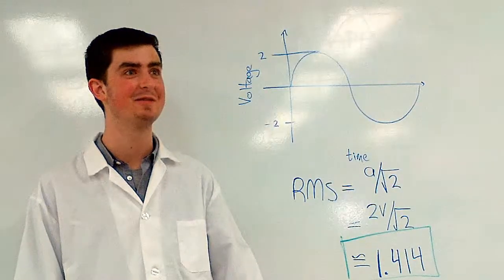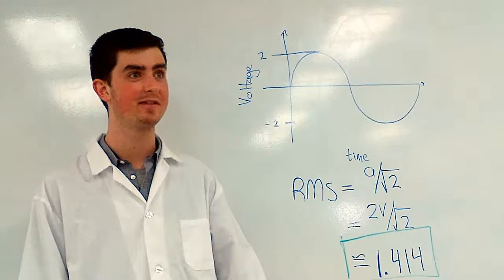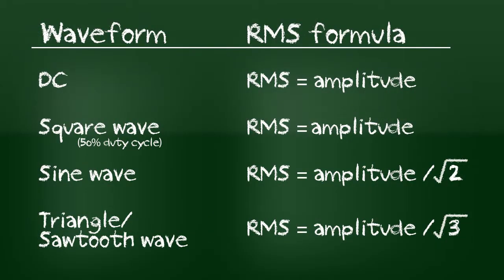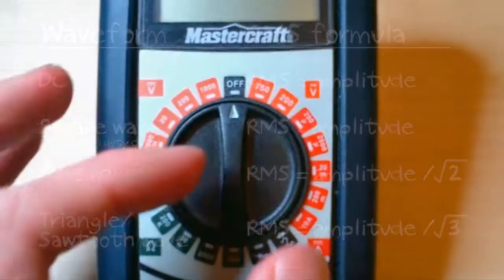To get the RMS value of a waveform, use the formula for the waveform shape. Brace yourself for this one, boys, because it's electrifying.